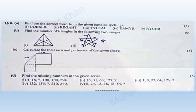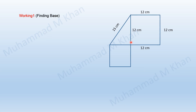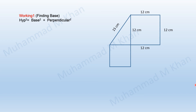Moving to Part C, we are required to calculate the perimeter and area of a given shape. From the geometry, the shape consists of two squares and one triangle. All sides of each square are equal: if one side is 12 centimeters, all sides of that square are 12 cm. The triangle has its hypotenuse given, and we apply the Pythagorean theorem to find the base.